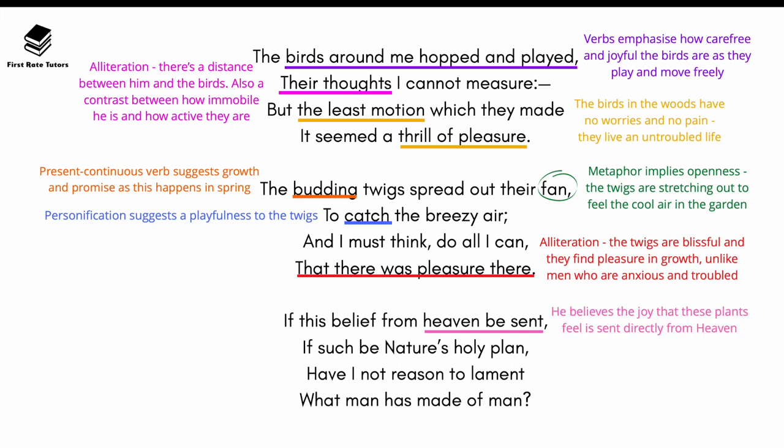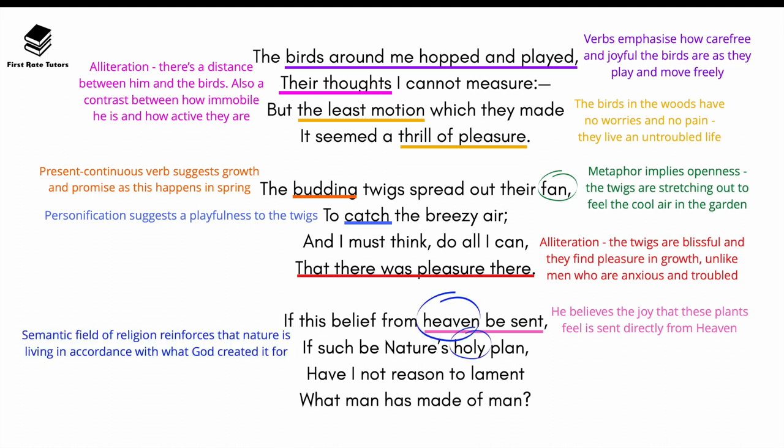In the final stanza, 'if this belief from heaven be sent' shows Wordsworth believes the joy of these plants is sent directly from heaven and God. He uses language from the semantic field of religion — 'heaven' and 'holy' — to reinforce that nature is living in accordance with what God created it for. This prompts us to question whether we, as human beings, are living in accordance with what we were created for.